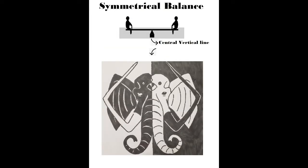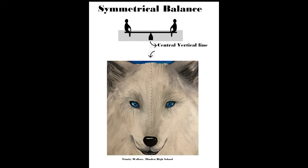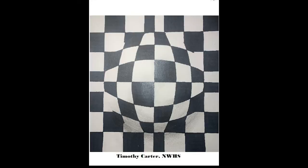It can be confusing, so let's look at some examples. In this elephant, the center line is not so invisible — you can see clearly that the right and the left side are mirror images of one another. This is symmetrical balance. In Trinity Wallace's painting of the wolf, I made that invisible line for you and you can see the right and left side are practically the same. In Timothy Carter's optical illusion artwork, you can see that invisible line going down the middle, the right and left side are the same, and the colors are inverted.